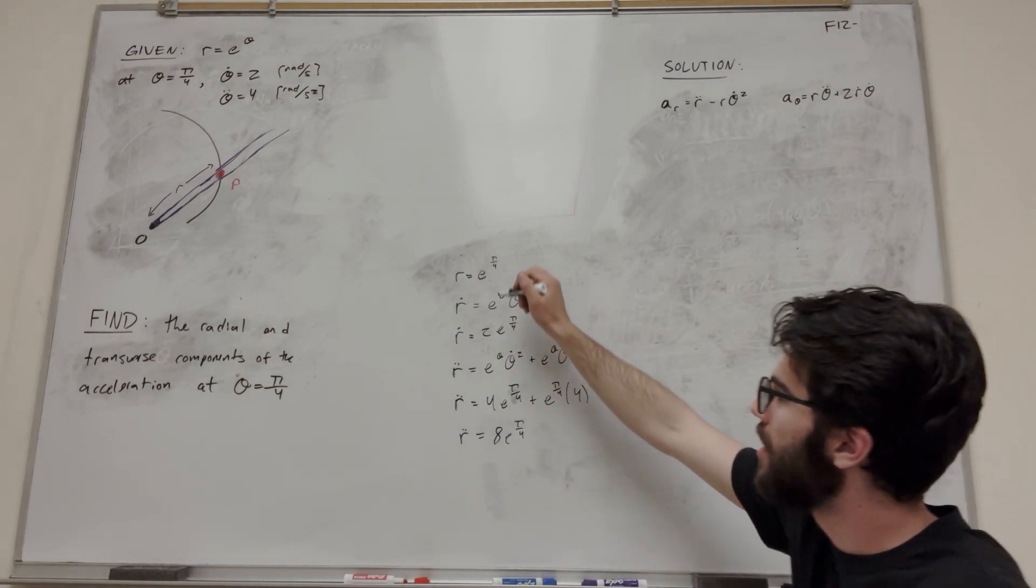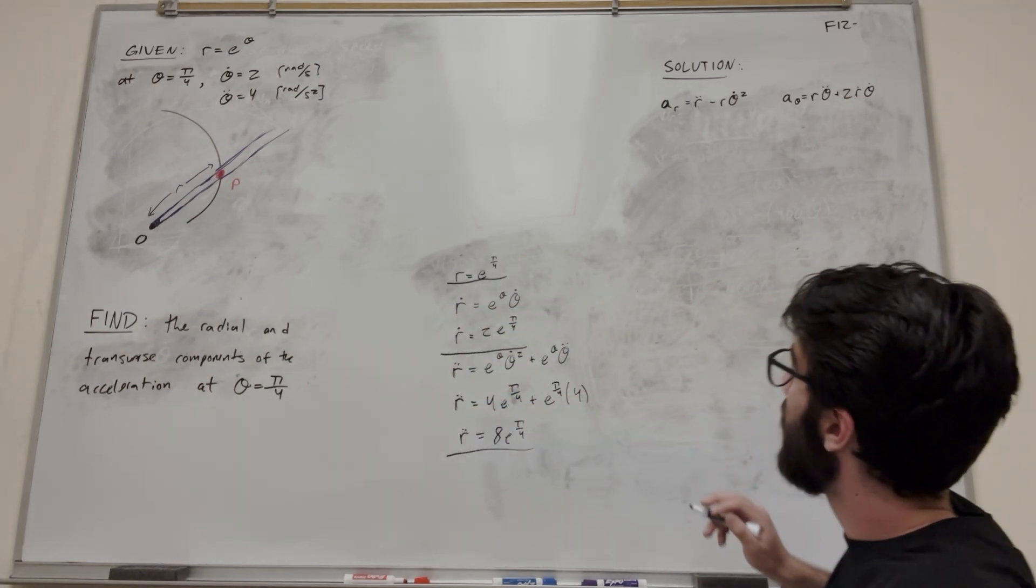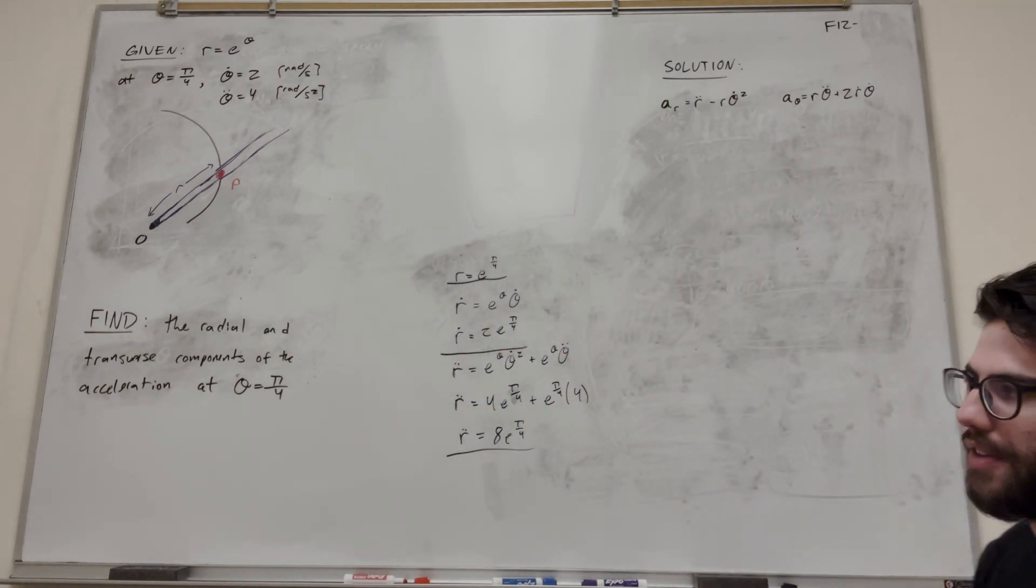Okay, so now we know what r is, we know what r single dot is, and r double dot. So we can go back up to these equations and solve them one at a time.